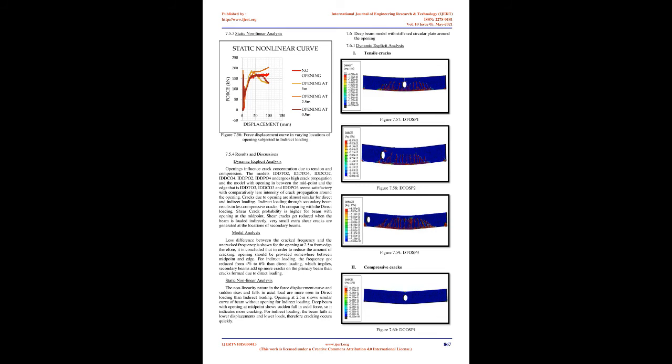The static nonlinear analysis provides the force-displacement curve to seek abnormality in nonlinearity. If the curve shows sudden rises and falls in axial load, the corresponding model is liable to high crack propagation. For S/D ratio 1, maximum displacement takes place under high axial force but the curve possesses numerous sudden rises and falls, resulting in distortion of the deep beam model. For S/D ratios 3 and 4, even if maximum displacement is reached at comparatively less axial loads, the curve remains normal, indicating optimum behavior due to ductility allowing bending and deformation without rupturing.